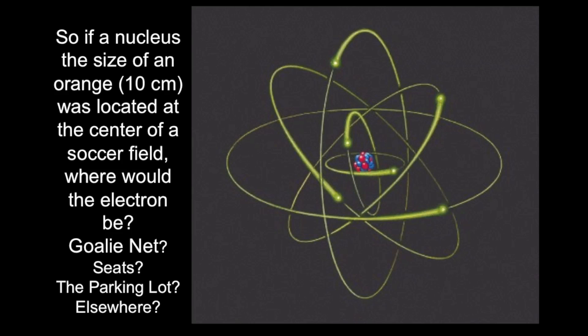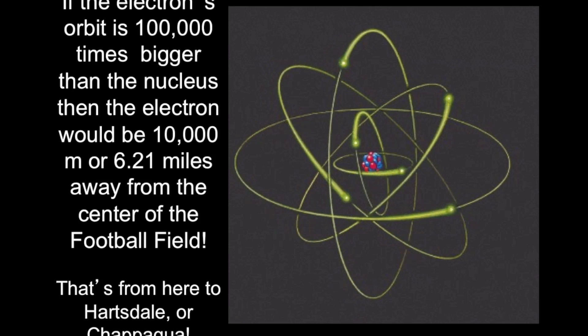Well, we'd have to go one hundred thousand times ten centimeters to go from the orange out to the first electron. And if we go from our location on campus in Valhalla, New York, to the first electron, that's going to be 10,000 meters or about six miles away. And so that's from Valhalla out to Hartsdale or even Chappaqua.